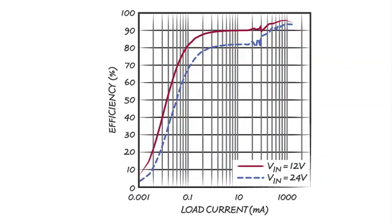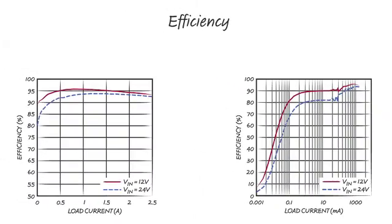On the right is a logarithmic plot where low load efficiency is easy to see. The efficiency is over 80% for loads of 100 microamps and 90% for loads of 500 microamps. Looking at both plots, we can see the LT8610 offers industry leading efficiency over a very wide range of load current.